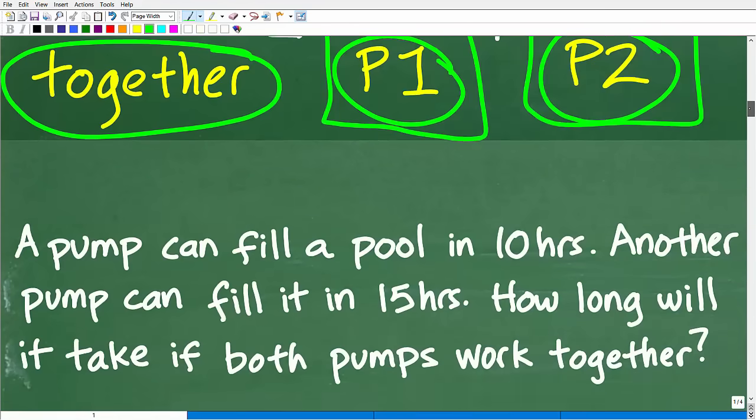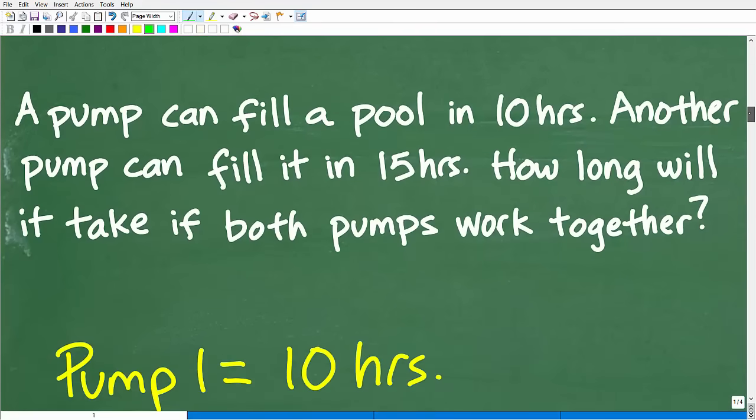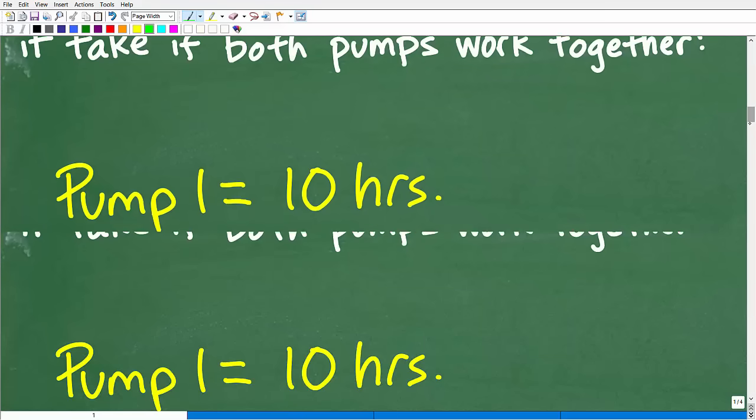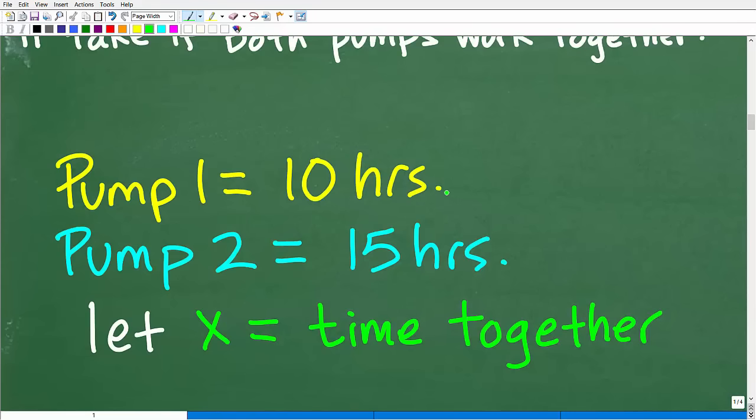Let's go ahead and solve the problem this way. What we need to do is start identifying the parts, the machines or people involved that is going to do this complete job. So we have one pump, we'll call that pump one. It can do the job in 10 hours. And then we have this other pump, we'll call that pump two. It can do the job in 15 hours. So we'll say pump one is equal to 10 hours, that's how long it takes pump one to do the job. Pump two, it takes 15 hours. And let's let X equal the time together.